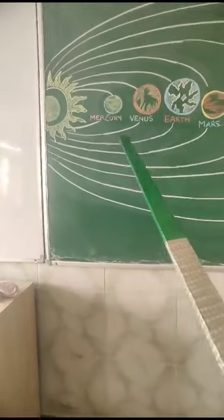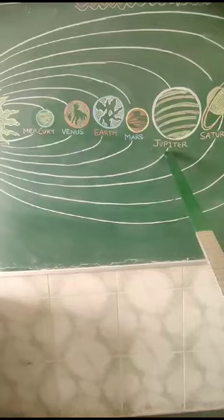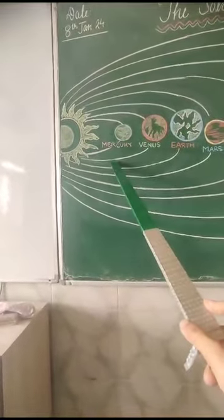Among all 8 planets, Jupiter is the biggest planet and Mercury is the smallest planet.